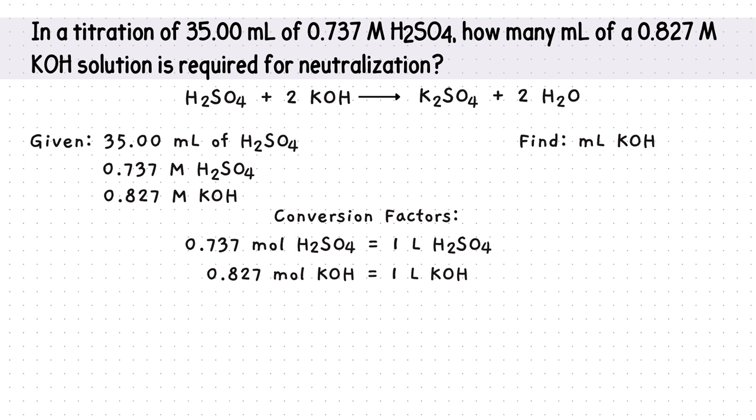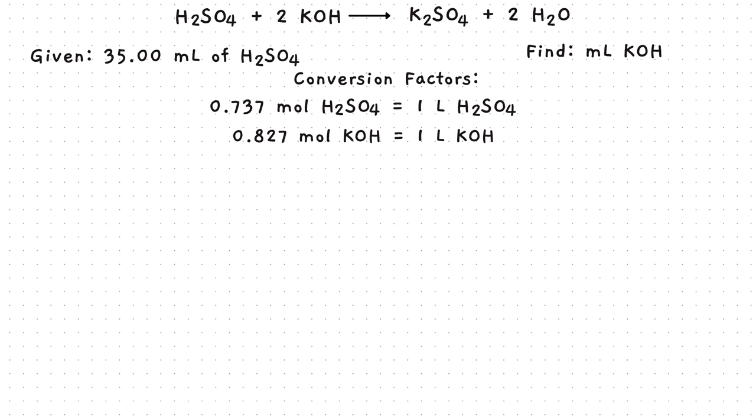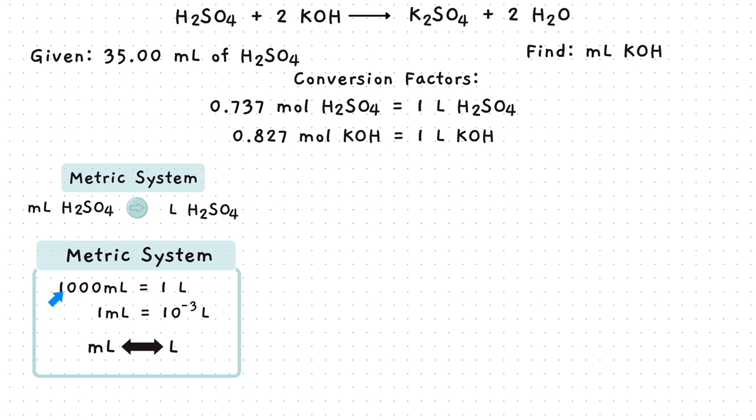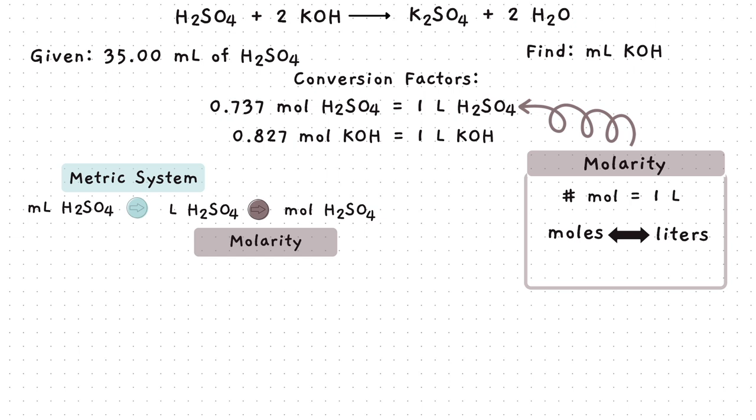Since both given molarities are our conversion factors, and conversion factors go in the middle and end of our overall setup, we are left with the 35 milliliters. This is what we will start with. The main idea here is that we are going from milliliters of sulfuric acid to milliliters of potassium hydroxide. Let's make some room for planning this all out. Using the metric system, either this conversion factor or this one, we will convert the given milliliters of sulfuric acid to liters of sulfuric acid.